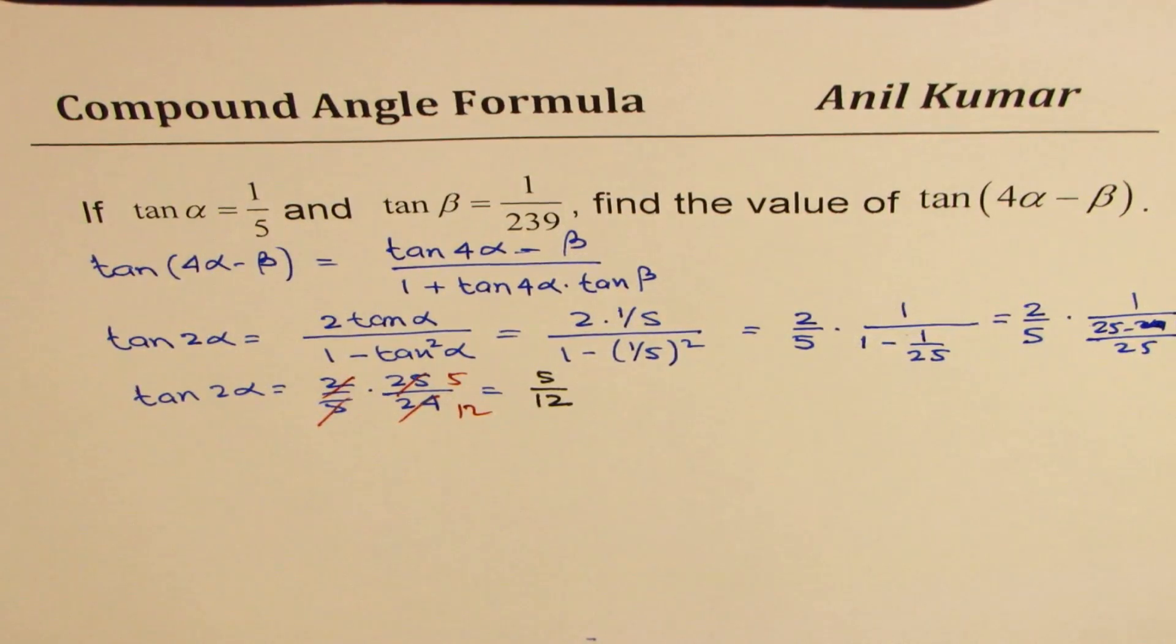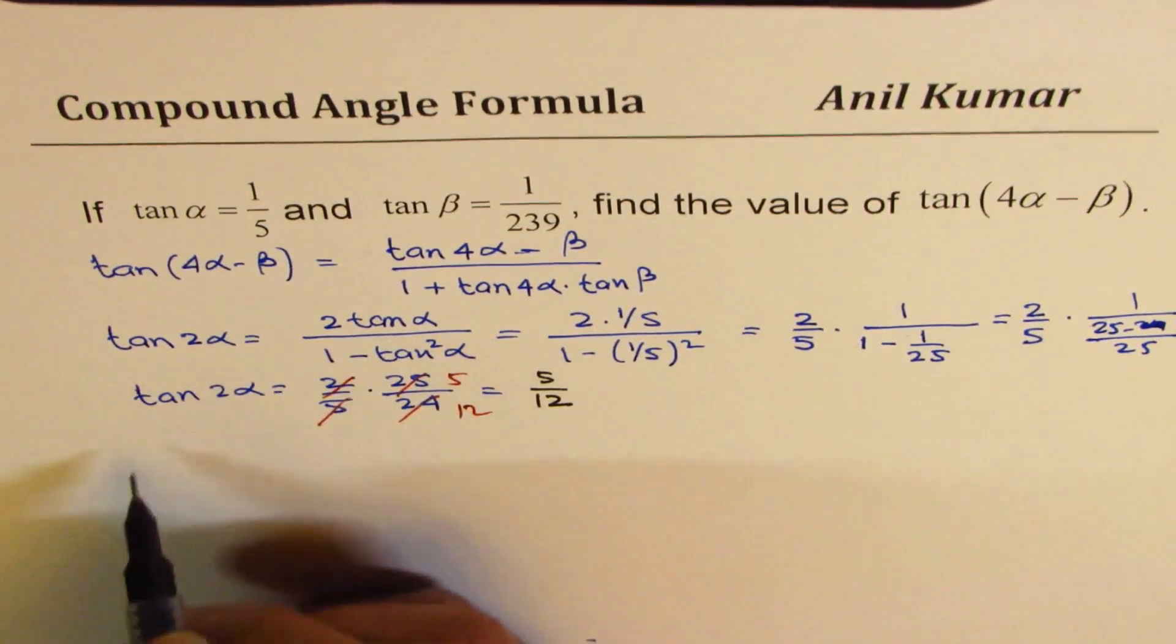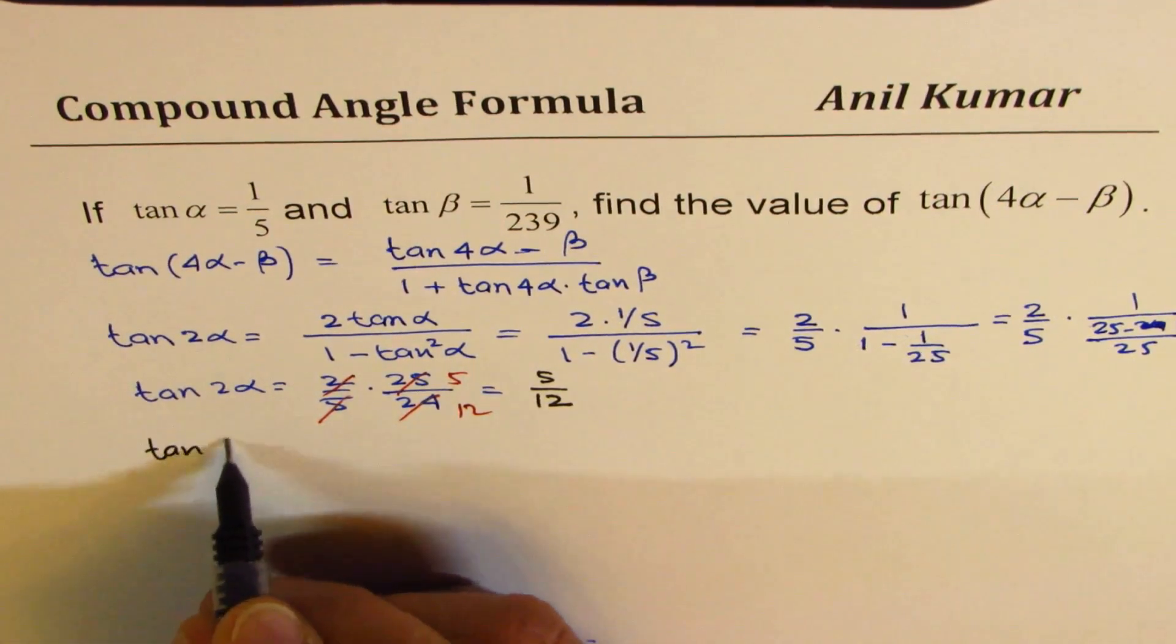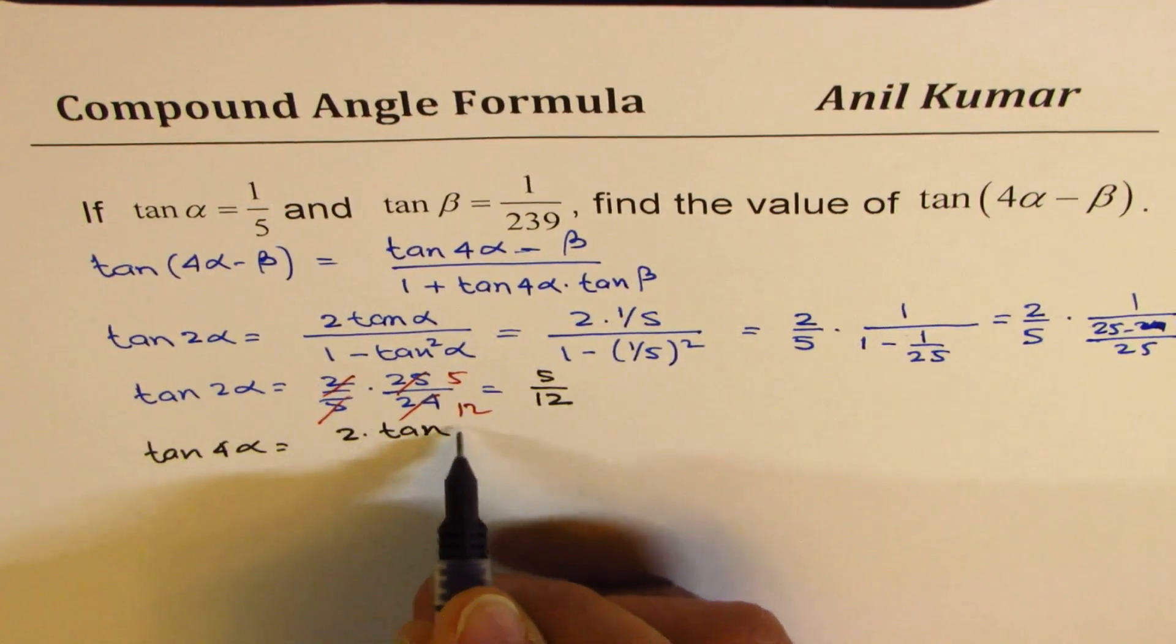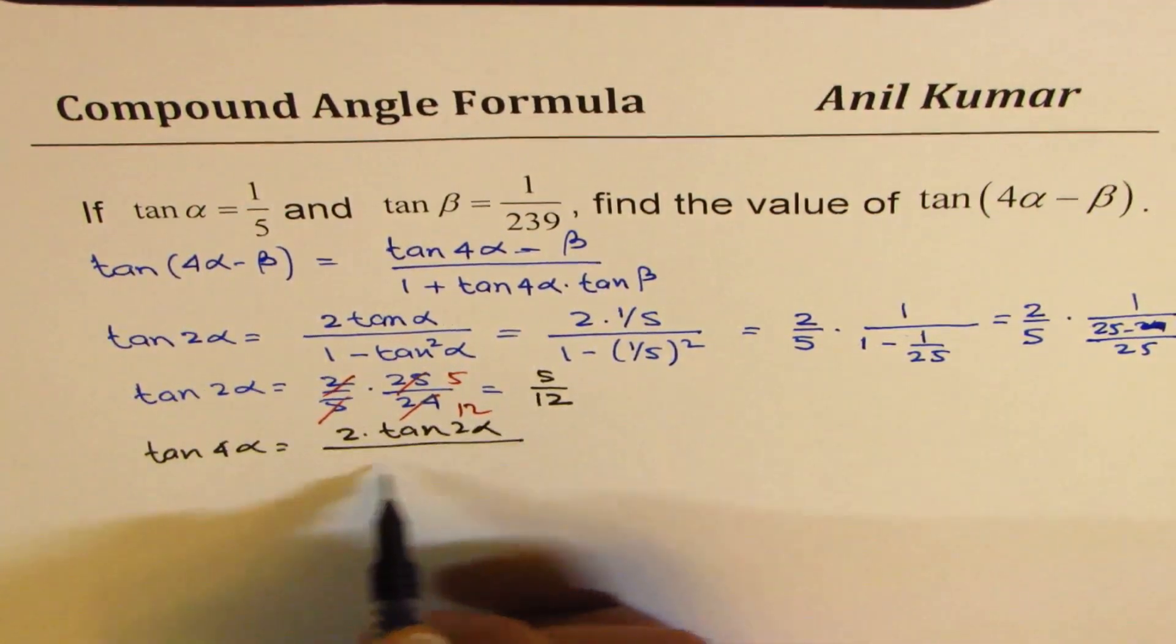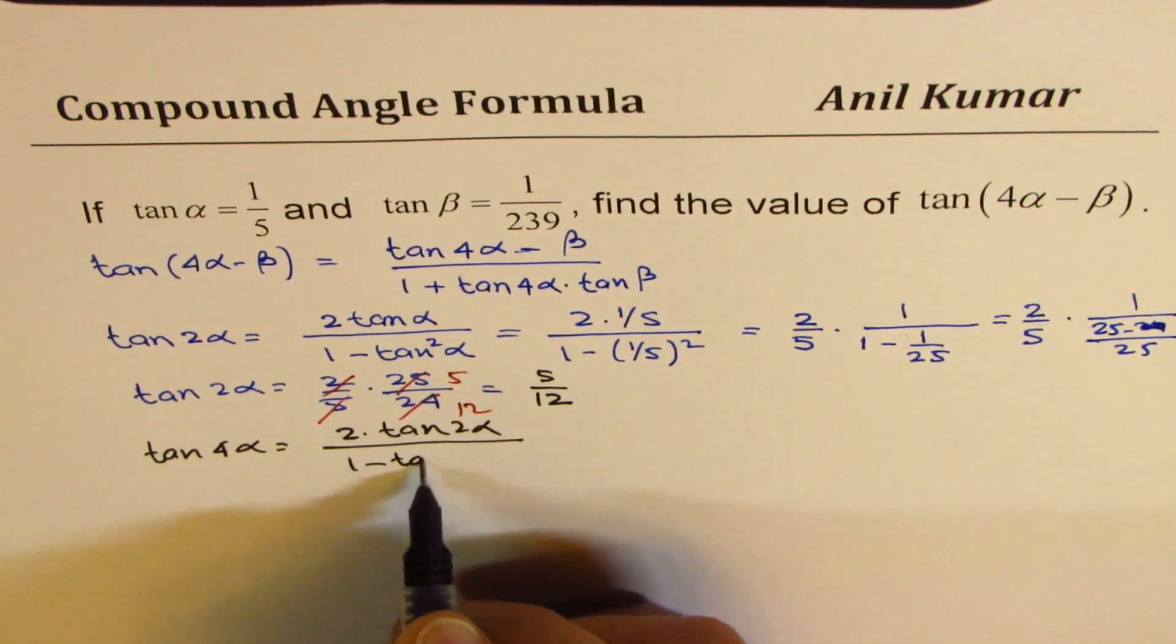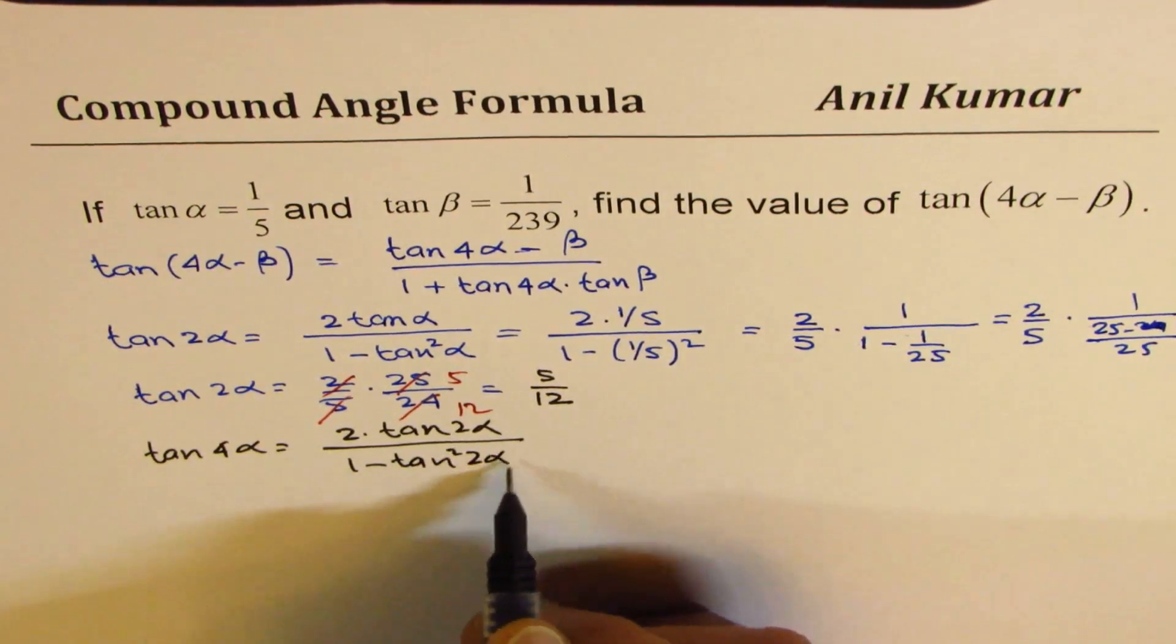Now, let's find tan 4 alpha using the same strategy. So tan 4 alpha will be 2 times tan 2 alpha over 1 minus tan square 2 alpha.